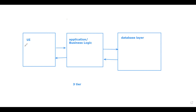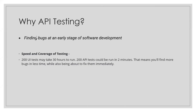Unless you are specifically checking the look and design of the user interface, or whether buttons match client requirements, you cannot replace UI testing for those aspects. But when we are just testing whether the data is correct according to client requirements, API testing is far more efficient. The second advantage is speed and coverage: 200 UI tests may take 30 hours, but 200 API test cases can be executed in just two minutes.